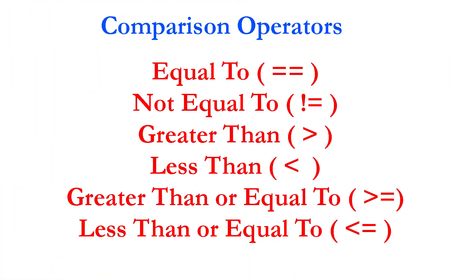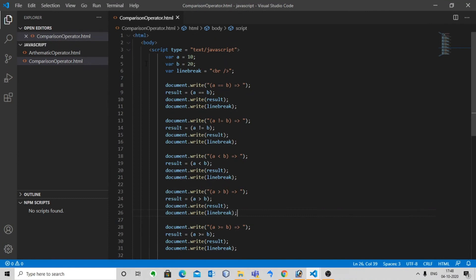The next one is comparison operators. Equal to, not equal to, greater than, less than, greater than or equal to, and less than or equal to come under comparison operators. Let's understand these with an example. Consider variable a which holds value 10 and variable b which holds value 20.